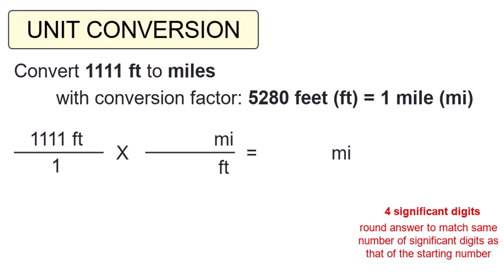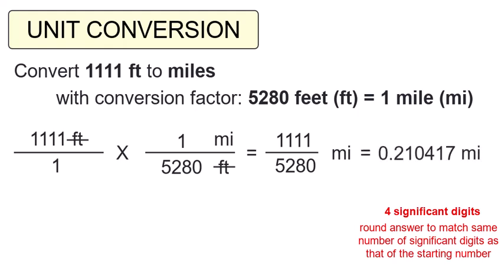Then we return to our conversion factor and place the numbers that match the units into this fraction. 5,280 goes with feet, 1 with miles. We confirm that our feet cancel and we'll be left with miles. We complete our calculation: 1,111 times 1 over 1 times 5,280, which ends up being 1,111 divided by 5,280. Answer: 0.210417 miles.